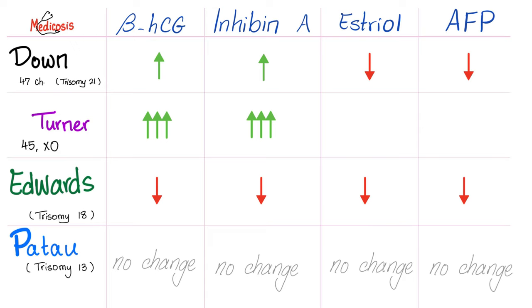Mnemonics: Down syndrome patients are pleasant and say 'Hi' to strangers — H and I — so HCG and Inhibin are high. For Edwards, remember the low-set ears: everything is low. Another mnemonic: the clenched fist was pointing upwards but all the lab results point downwards. Patau is peaceful — everything is normal.